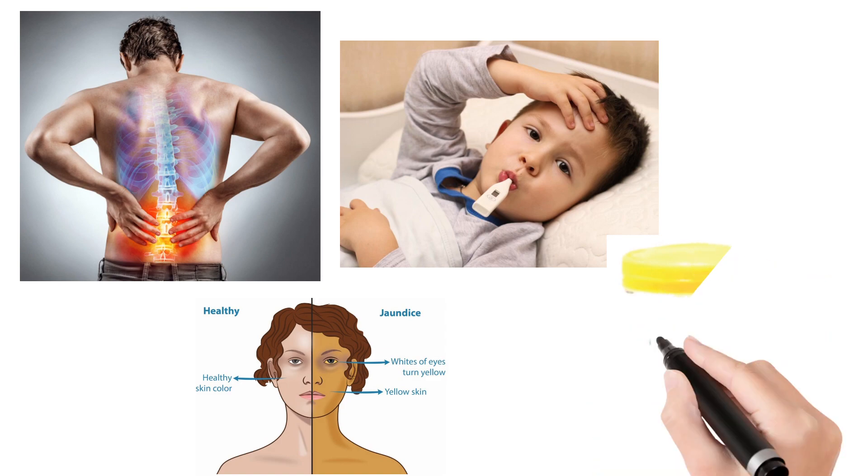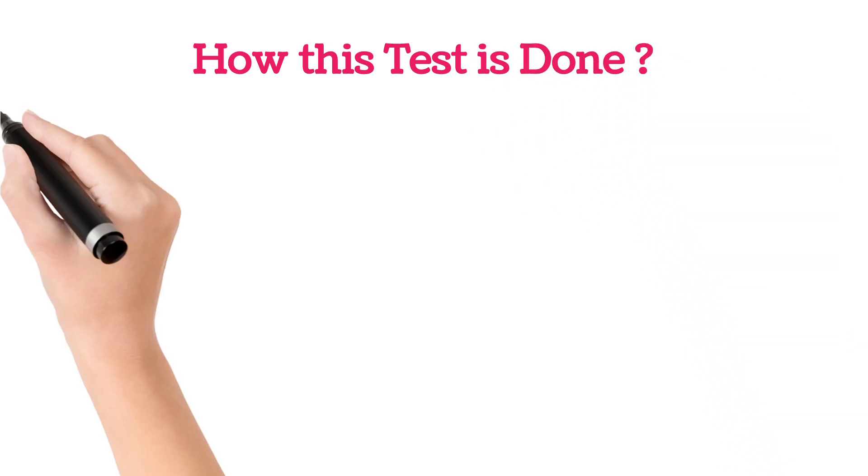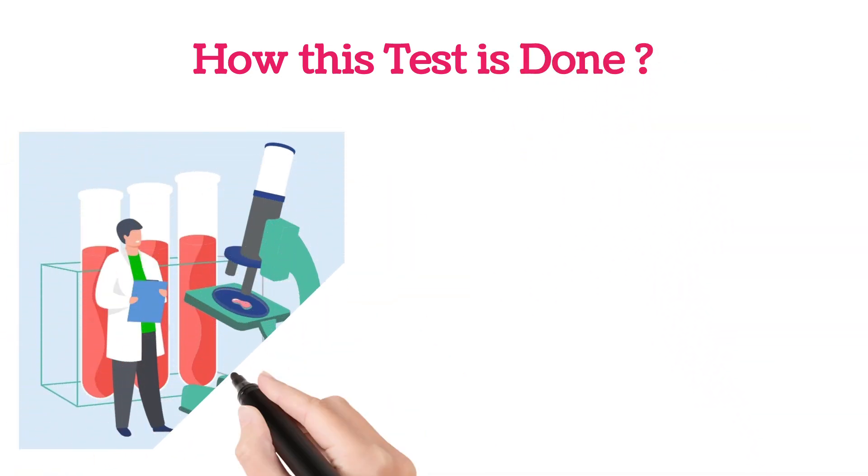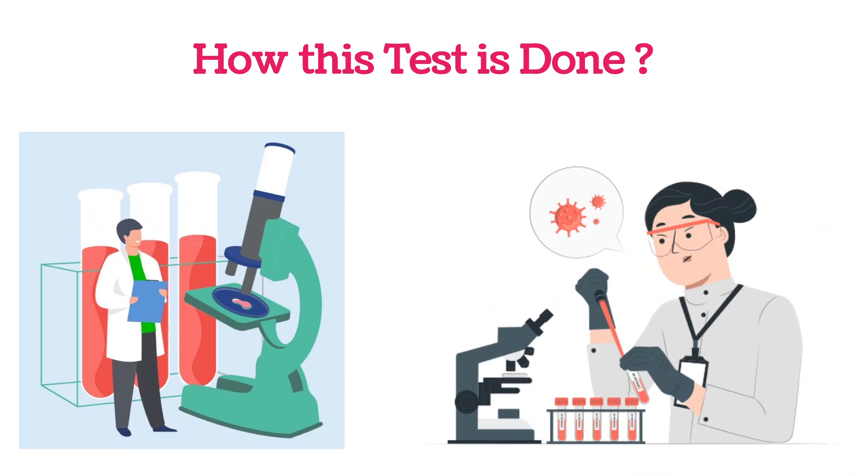Coming to the test, this is a blood test where a blood sample is collected and the blood is drawn and tested. The sample is assessed for the Hepatitis B virus. The result may come in one day, and in some hospitals the report may come within one to two hours.